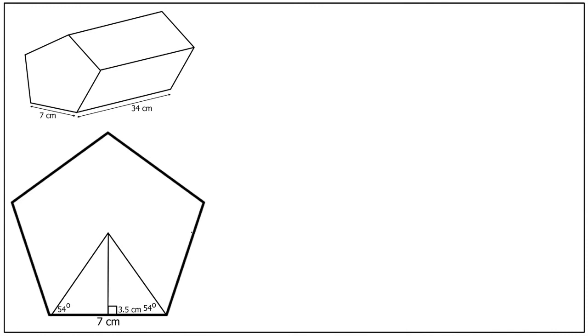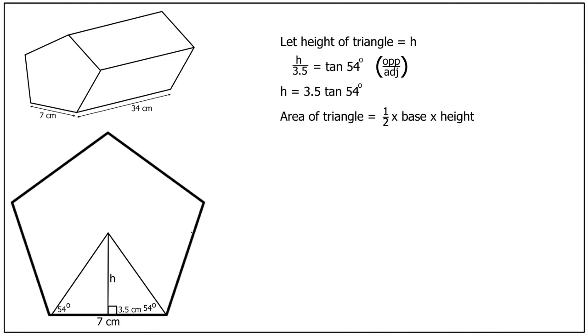Now we're getting somewhere because we can use a little trigonometry to find the height of the triangle. Let's call the height of this triangle h. Then we can write h over 3.5 is equal to the tangent of 54 degrees. h is therefore 3.5 tan 54 degrees. The area of the whole triangle is given by half the base multiplied by the height, which is half of 7 multiplied by 3.5 tan 54 degrees.